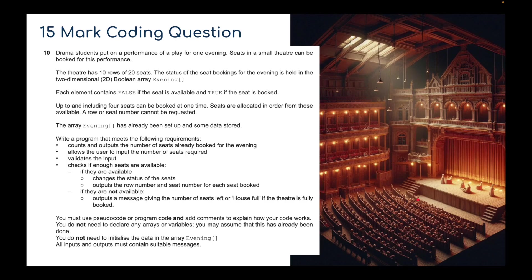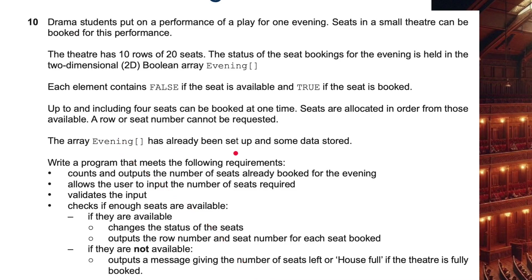So you couldn't pick a specific seat - if the theatre was empty, it would pick the next consecutive seat. It would start at A1, then go A1, 2, 3, 4. And if somebody else booked, it would go A5, 6, 7, 8, or however many seats were booked. So it fills up from the front and carries on until it's full. The array 'evening' has already been set up and some data has been stored. In my Python code, I've set up some test data. Write a program that counts and outputs the number of seats already booked for the evening.